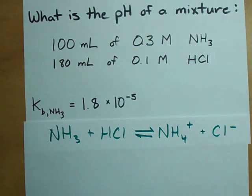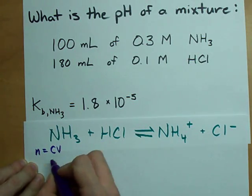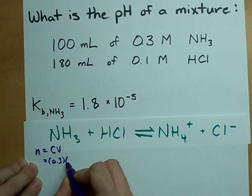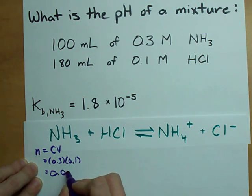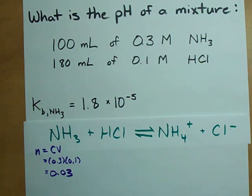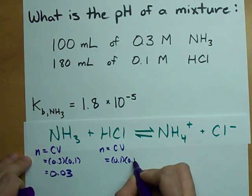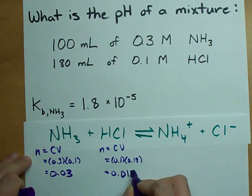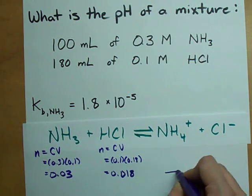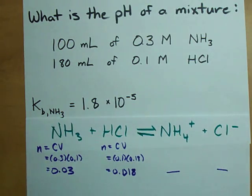Here's how I like to solve titration problems: once I have my neutralization, acid plus base equals whatever it makes together, I like to write the number of moles of each right underneath. The number of moles of NH3 is concentration times volume, that's 0.3 moles per liter times 0.1 liters = 0.03 moles. HCl: the number of moles is 0.1 moles per liter times 0.18 liters = 0.018 moles. We don't start out with any products.